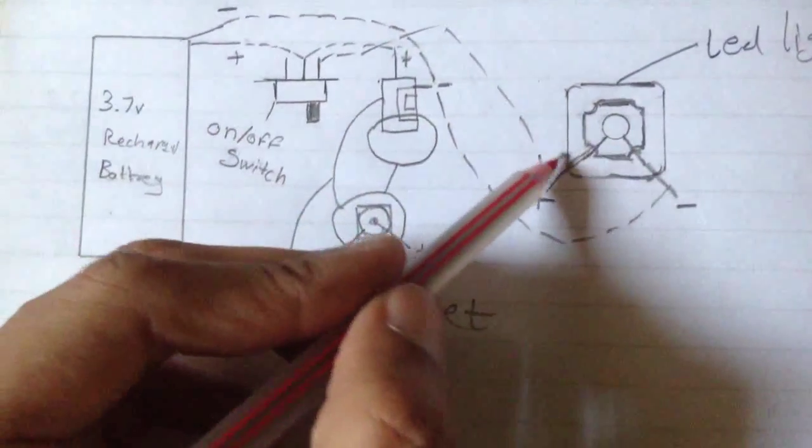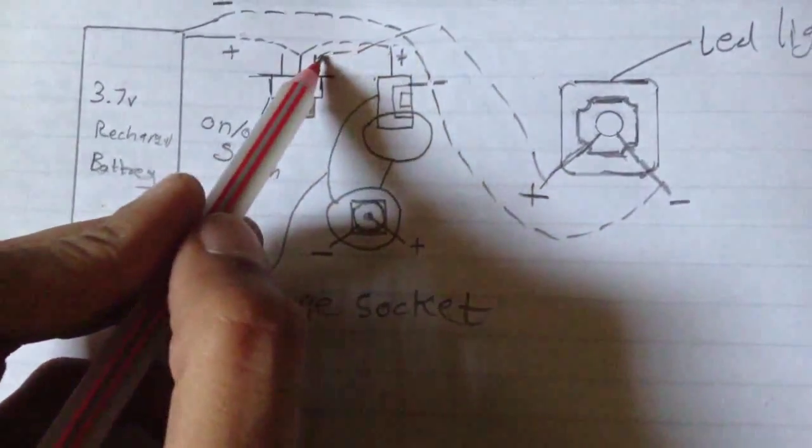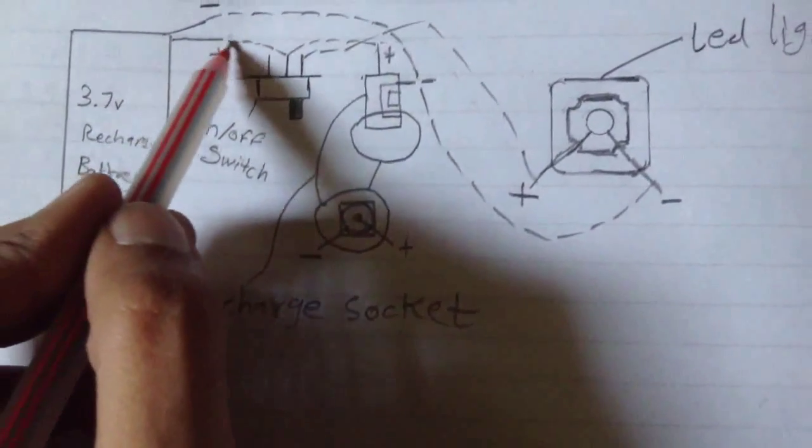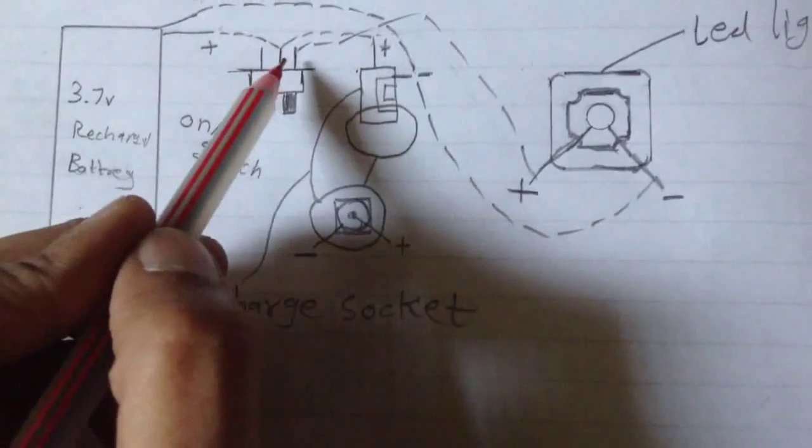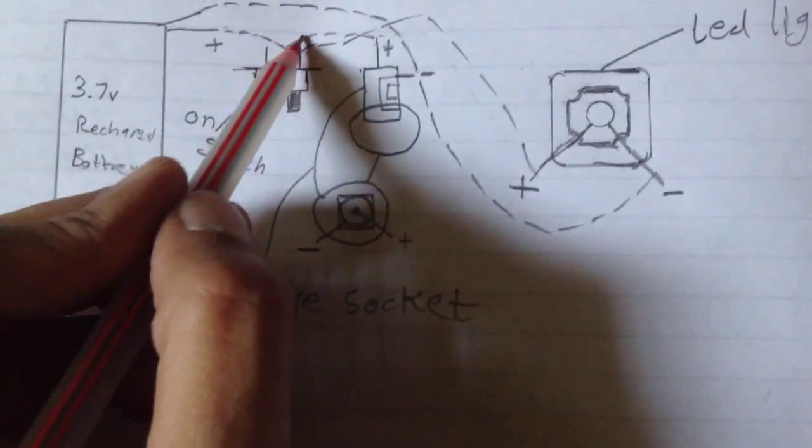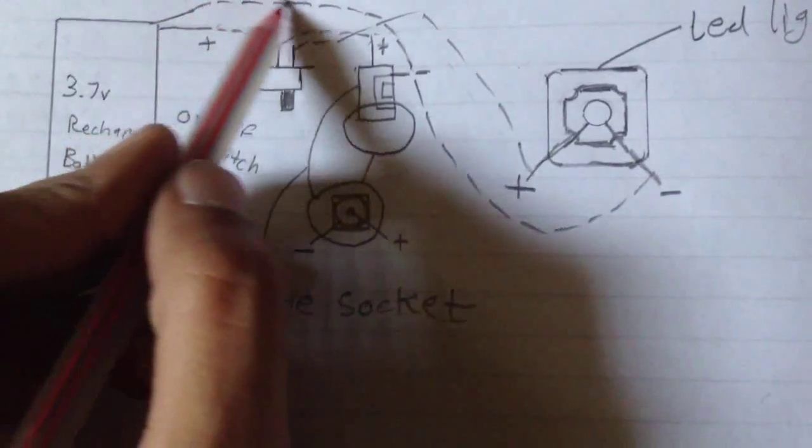The plus connects to the switch so you can turn the LED light on and off. Another plus connects to the recharging component like this, and your circuit is complete.